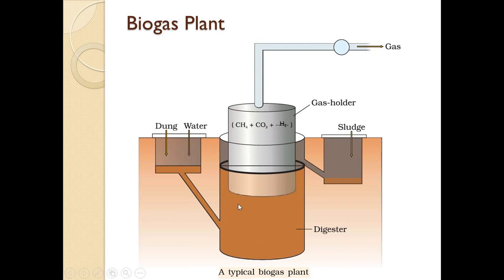Once the slurry is completely utilized, the leftover spent slurry is used as a fertilizer — it can substitute chemical fertilizers and is very helpful in increasing the fertility of soil in agricultural fields. In this module, we have learned about the role of microbes in biogas production. Biogas is an alternative fuel produced with the help of methanogenic bacteria.